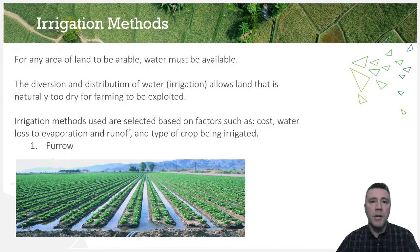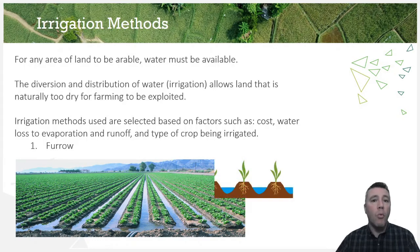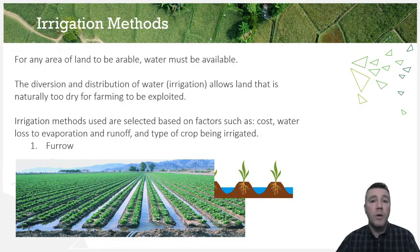Furrow irrigation involves plants grown in rows of raised ridges, with water flowing between those ridges in trenches. This type is relatively inexpensive, but suffers from high evaporative water loss. Crops such as cotton, corn, and sugar cane are particularly well-suited to furrow irrigation.